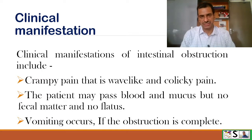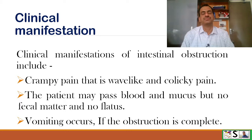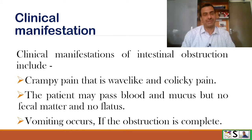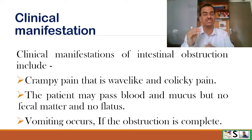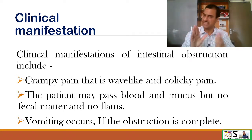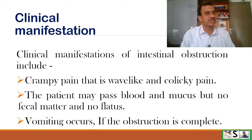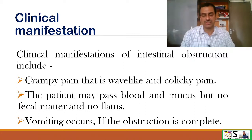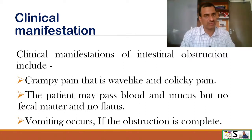Clinical manifestations: How will you know that there may be intestinal obstruction? The main sign or symptom is crampy, wave-like colicky pain. Colicky pain means very sharp pain related to the gastrointestinal tract or urinary tract — here it is related to the gastrointestinal tract. The patient may pass blood and mucus through the anus but there is no fecal matter or flatus.